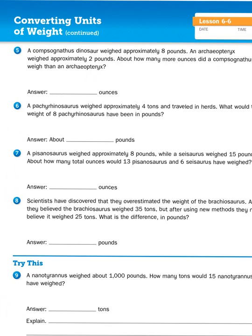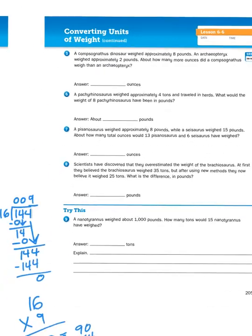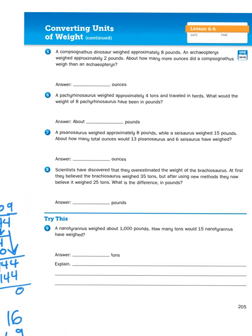Let's take a look at problem number 5. A Compsognathus dinosaur weighs approximately 8 pounds. An Archaeopteryx, did I say that right? Archaeopteryx, that was pretty close. Okay, so a Compsognathus dinosaur weighs approximately 8 pounds. An Archaeopteryx dinosaur weighs approximately 2 pounds. About how many more ounces did a Compsognathus weigh than an Archaeopteryx? Archaeopteryx, that's a tough one.